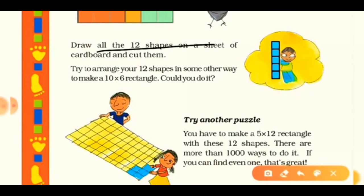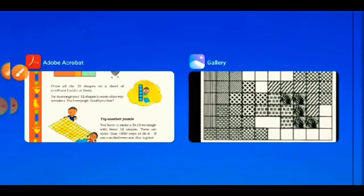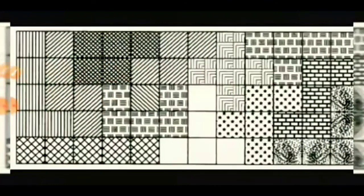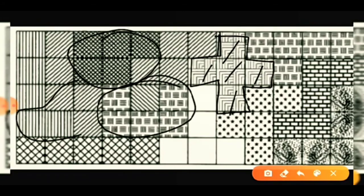Draw all 12 shapes on a sheet of cardboard and cut them out. Now try another puzzle: make a 5×12 rectangle with these 12 shapes — there are more than 1000 ways to do it. Here is a picture showing different patterns using pentominoes to fill the 5×12 rectangle. You can see various shapes numbered and arranged to complete it.